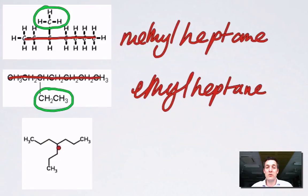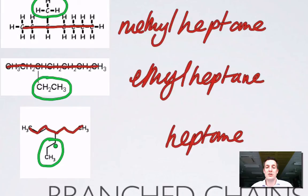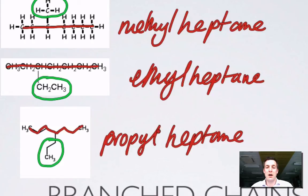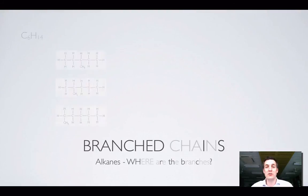This molecule drawn with each point representing a carbon atom has seven carbons in the longest chain — another heptane. But this one has a chain of three carbons coming off it. The prefix for three is 'prop', so this is propylheptane. I haven't yet said where the branches are attached — just how to name the branches themselves.